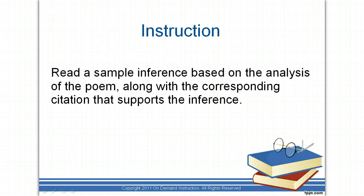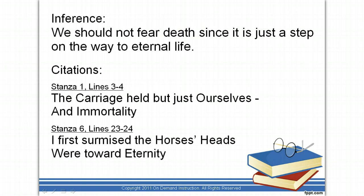Now that we've understood the explicit text, let us read a sample inference that can be made from the text and the citation that supports it. We may infer that we should not fear death, since it is just a step on the way to eternal life. To support this, lines 3-4 of the first stanza — 'The carriage held but just ourselves and immortality' — indicates that the main character's journey doesn't just stop at death. Lines 23-24 of the sixth stanza — 'I first surmised the horses' heads were toward eternity' — indicates eternal life as the final destination of the main character's journey.